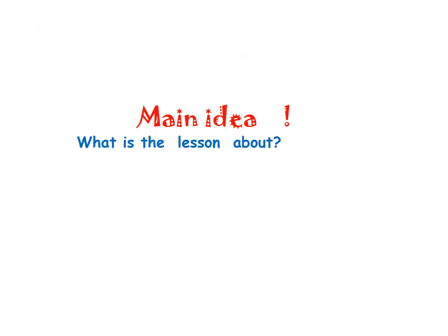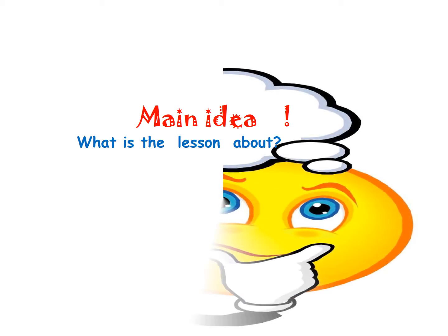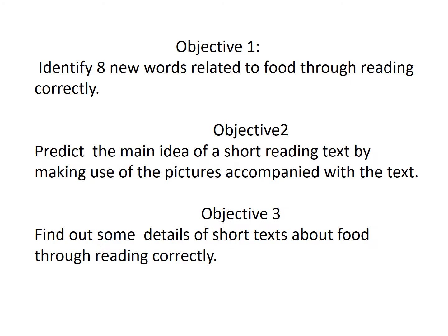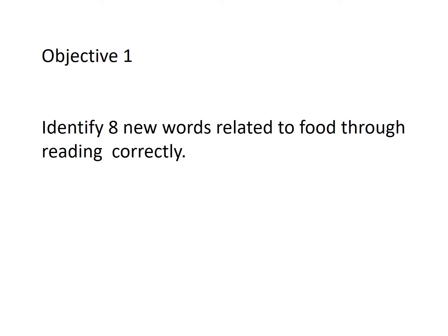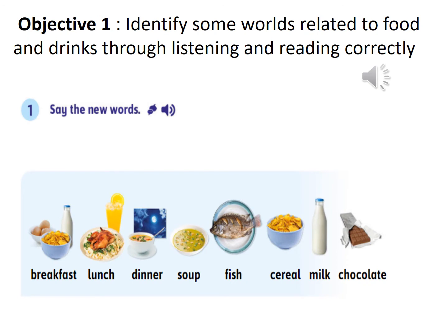Now we come to the main idea of the lesson. Objective number one is to identify eight new words related to food through reading correctly. Module four, Our World. Say the new words: breakfast, lunch, dinner, soup, fish, cereal, milk, chocolate. Very good — in this way we learned the new words of the lesson.